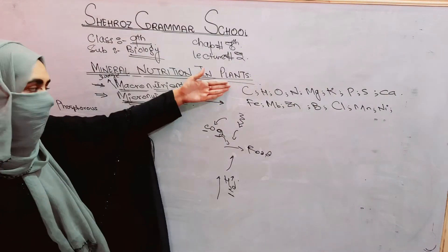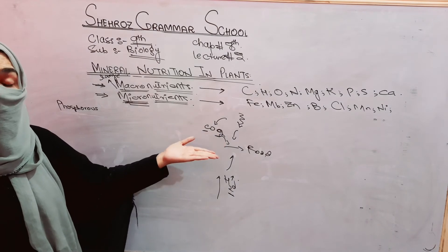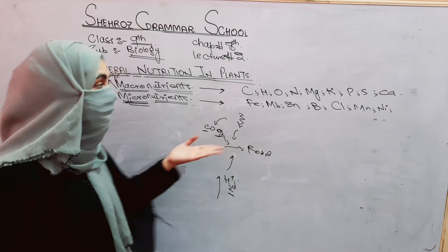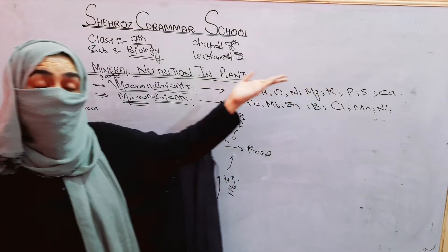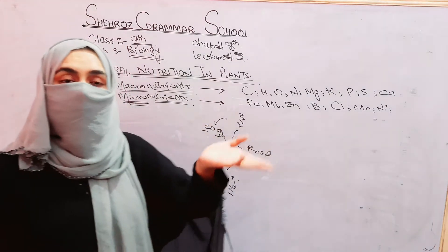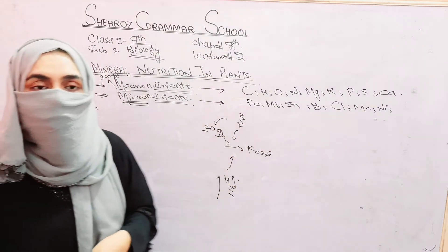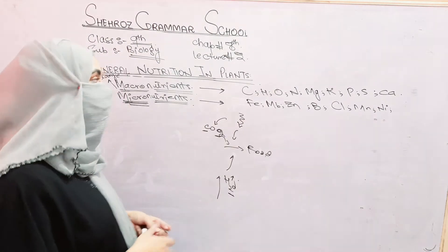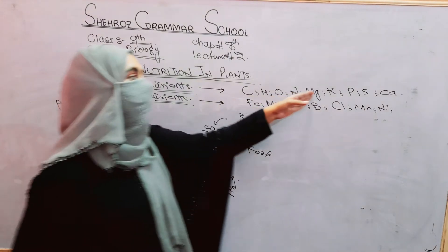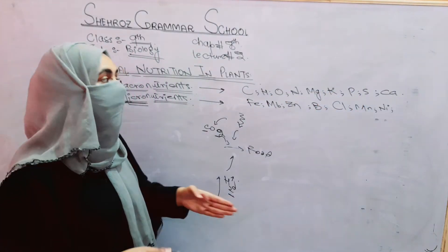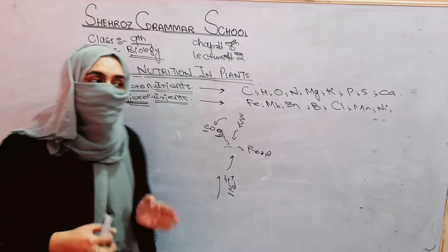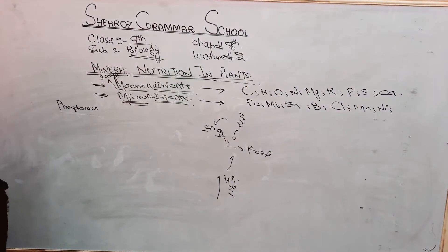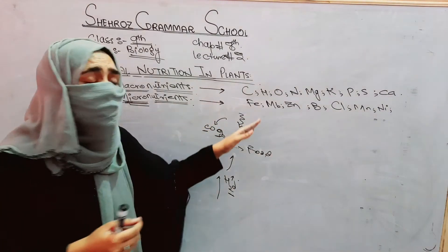Like carbon from carbon dioxide, hydrogen from water, oxygen, nitrogen, phosphorus, potassium, sulfur, calcium, and magnesium - these are macronutrients which we call macronutrients.